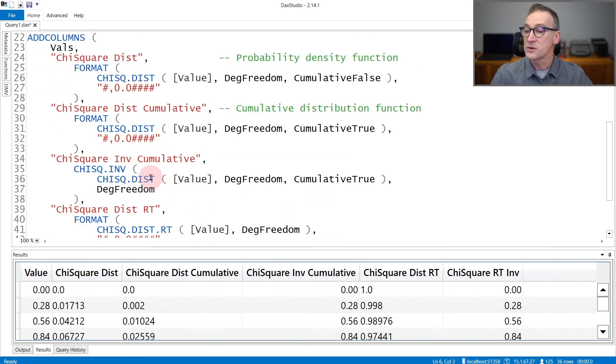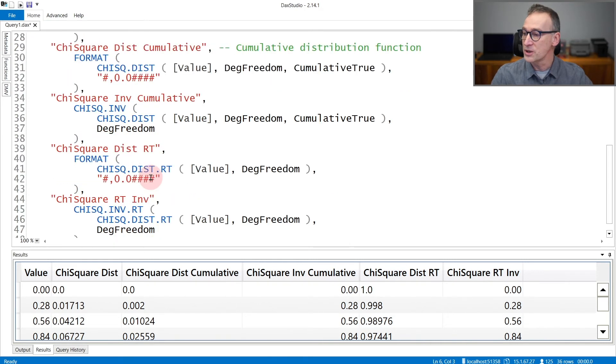You can also use the inverse function. The inverse function requires the argument to be a cumulative value and returns the original value.